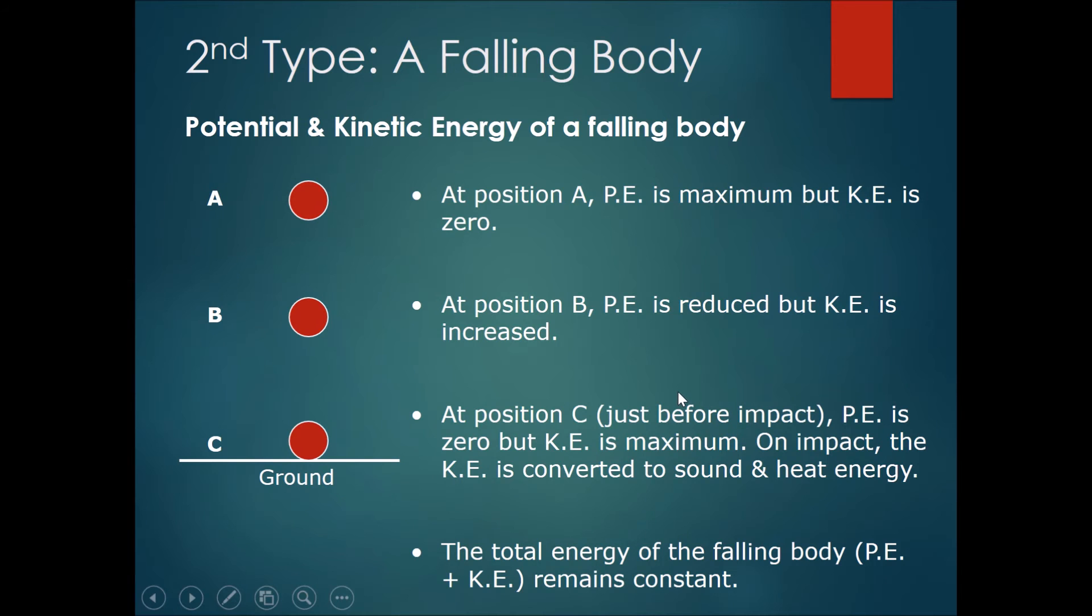This example is not only used in pendulums, you can also use it in falling bodies. For example, let's say you drop the ball off the side of a building. It will start falling down and gain speed as it falls. At position A, when you just release the ball itself, at that instant, the ball is not moving. So the KE will be zero. However, gravitational potential energy will be the maximum because it will be at the highest place.